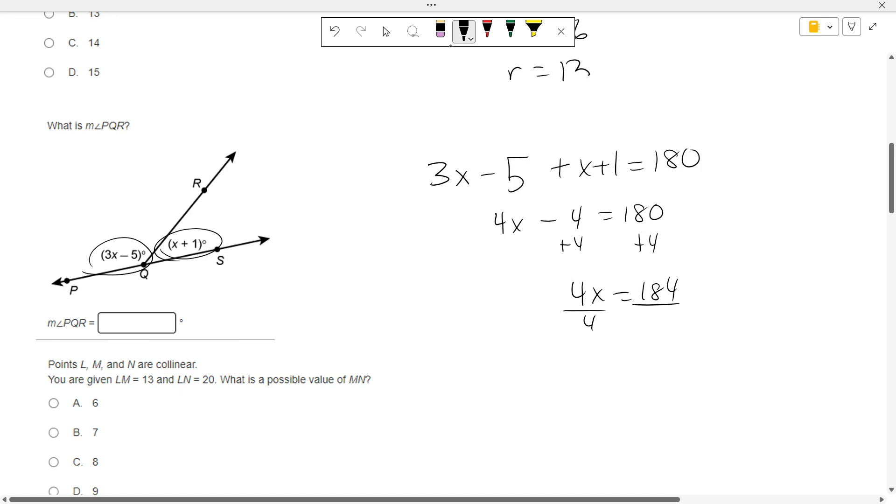4X equals 184. Divide by 4. What do we get? 46. Now, it asks for PQR. PQR is not 46. PQR is what you get when you stick 46 in there. So 3 times 46 minus 5. 3 times 46 is 138 minus 5 is 133. That's what PQR is.